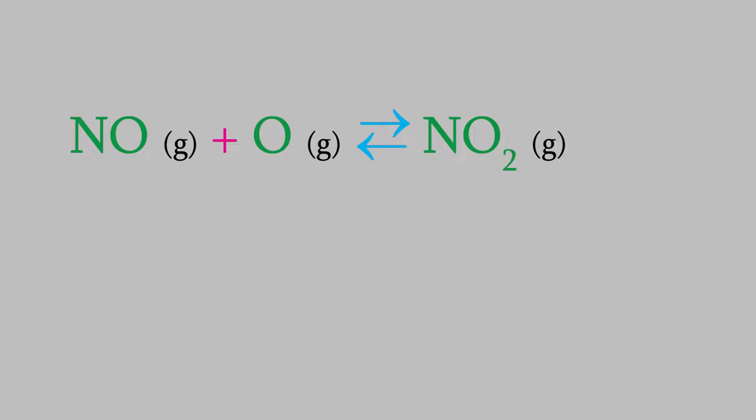But, remember, I mentioned a moment ago that this is an exothermic reaction. That means it releases heat, so we can think of heat as being a product of this reaction. We can show that by writing the symbol for enthalpy, delta H, on the product side of the reaction.